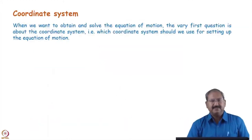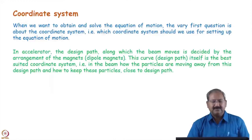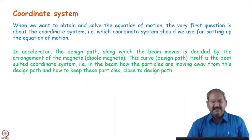Whenever we try to formulate the equation of motion for a dynamical system, we first have to choose a suitable coordinate system. In accelerator physics we will choose a suitable coordinate system. The Cartesian coordinate system (x, y, z) is not very useful here, because in an accelerator we make the design path itself the reference.